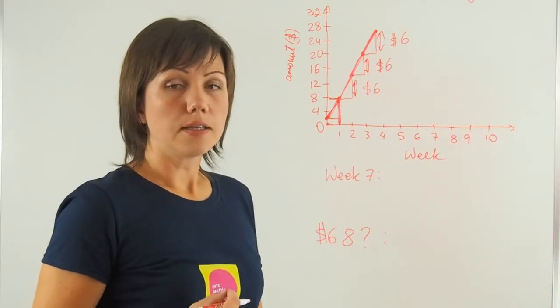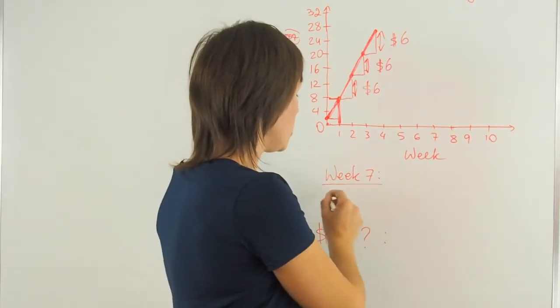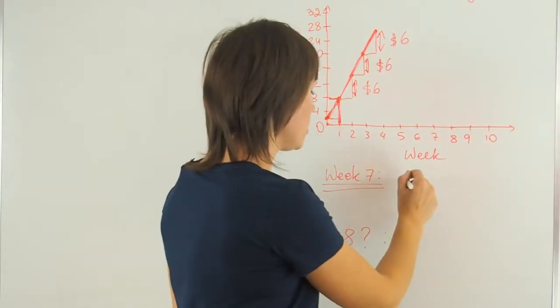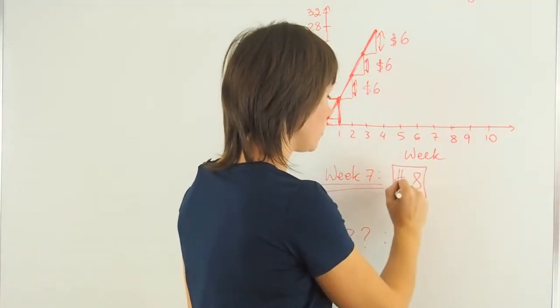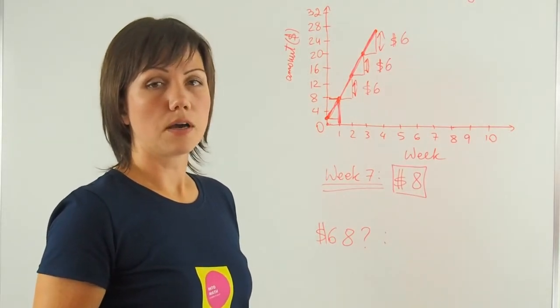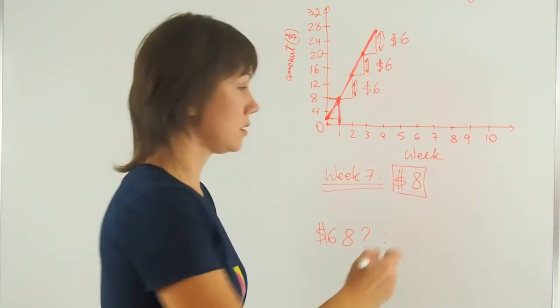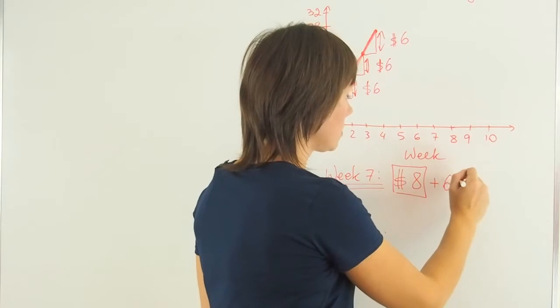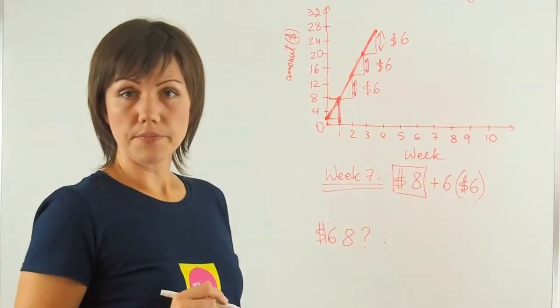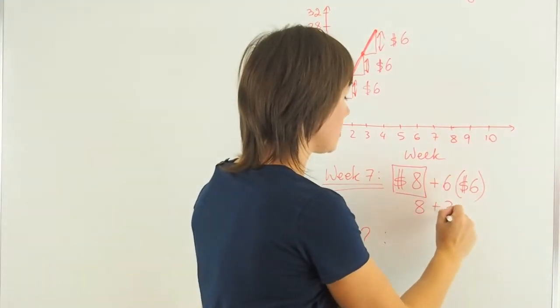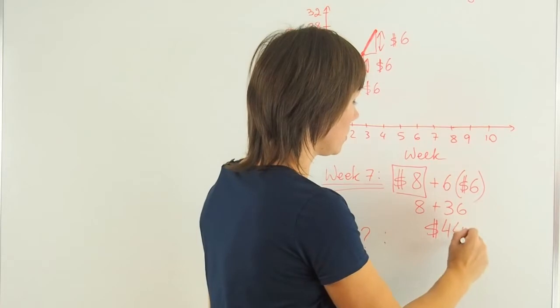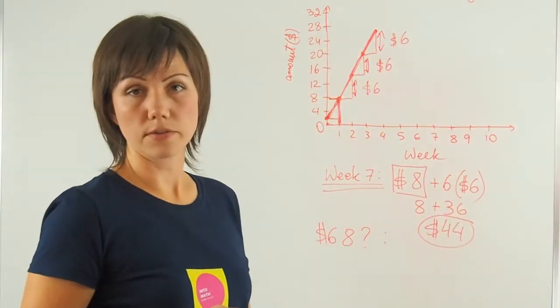So that information helps me find how much he will have on week seven. So if initially he had eight dollars on the first week and then during six more weeks, he was saving up six dollars each week, then we'll do plus six times six dollars. And then eight plus 36 is 44 dollars total after seven weeks.